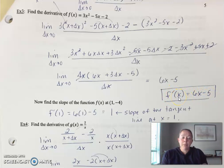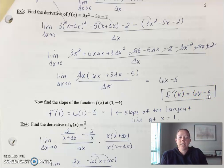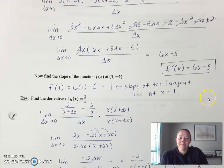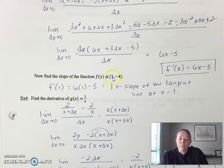Notice how I've written the answer: f′(x) = 6x − 5. Now I have a formula where I can pick any x-value and plug it in, and it will spit out the slope of the tangent line along that curve. The problem then says find the slope of the function at (1, −4). I only need the x-value, so plug 1 in: f′(1) = 1. The slope of the tangent line at x = 1 is 1.